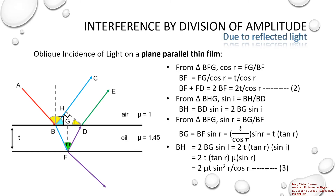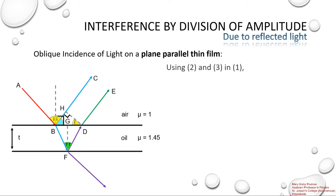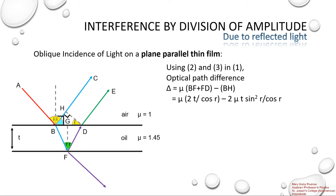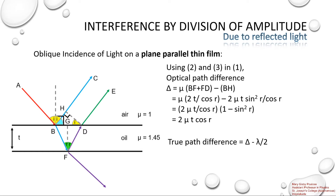Substituting the second and third equations into the first equation, the optical path difference delta equals mu into (BF + FD) minus BH. Substituting all terms: mu into 2T by cos R minus 2 mu T sin²R by cos R. Taking out the common term 2 mu T by cos R, the remaining factor is 1 minus sin²R, which equals cos²R. So cos²R divided by cos R gives the optical path difference as 2 mu T cos R. The actual or true path difference is delta minus lambda by 2.